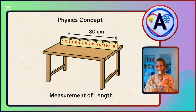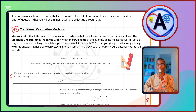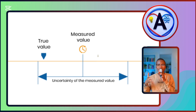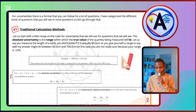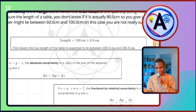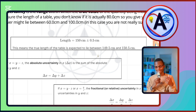You give yourself a range — your answer might lie between 60.0 and 100.0 centimeters, so your range is plus or minus 20. That's what we call an absolute uncertainty. For example, I could say my length is 150 cm ± 0.5 cm. This means the true value is expected to lie between 149.5 and 150.5 centimeters.